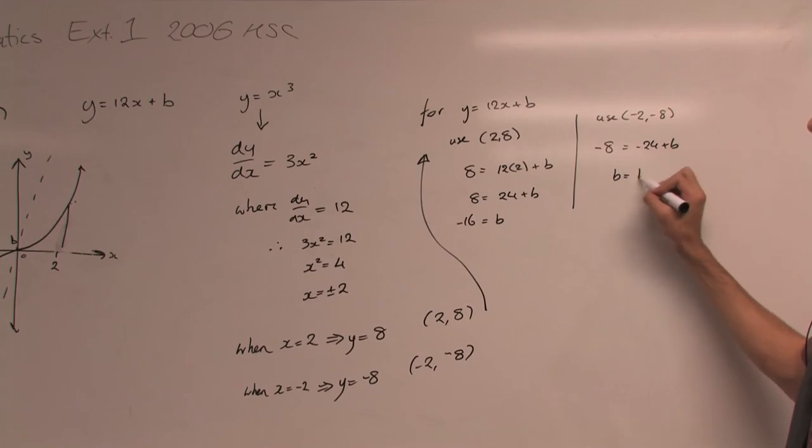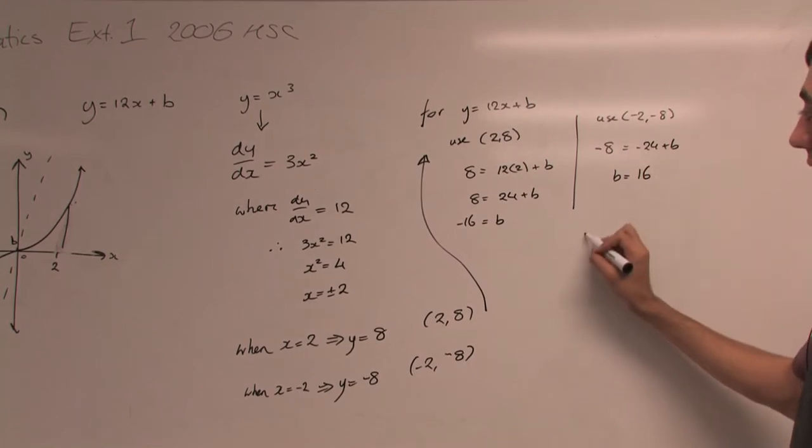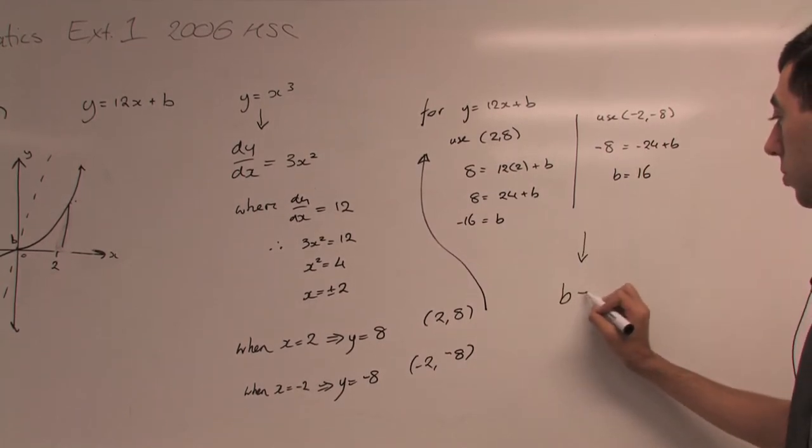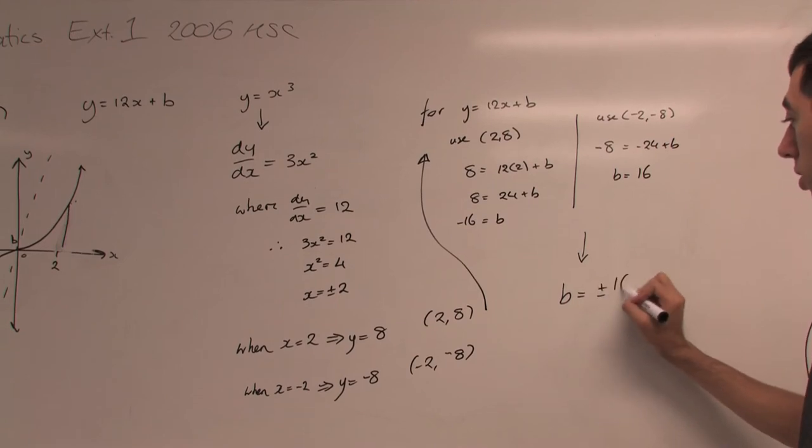So there you go. We've now established that b can be equal to plus or minus 16.